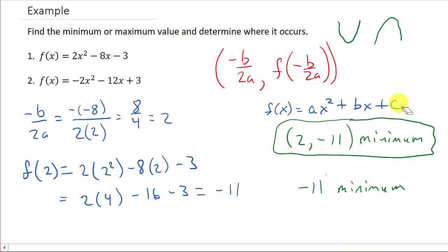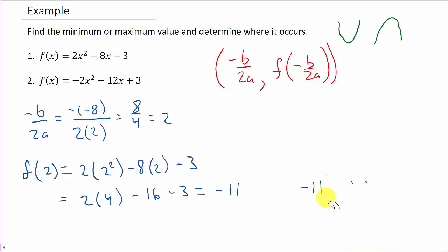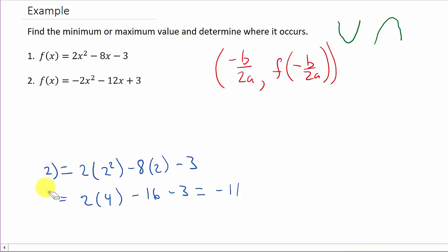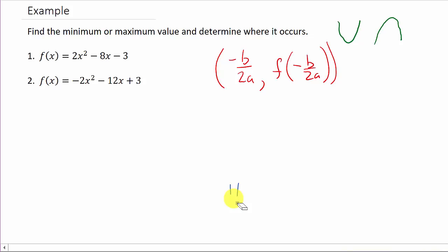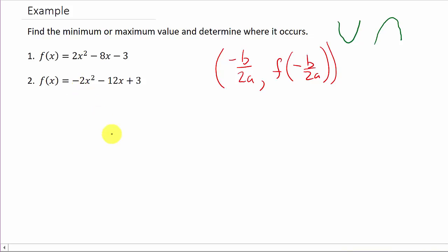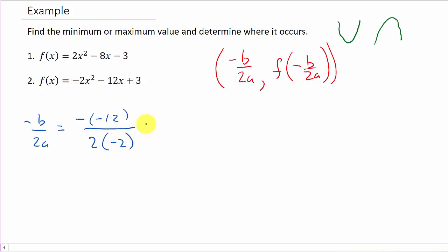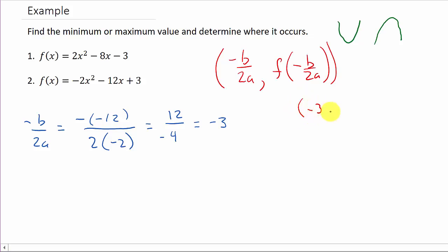Now let's look at the second problem. We need to find negative b over 2a. Here b is negative 12 and a is negative 2. So that's negative of negative 12 over 2 times negative 2, which is 12 over negative 4, giving us negative 3. So negative 3 is the x-coordinate of the vertex.